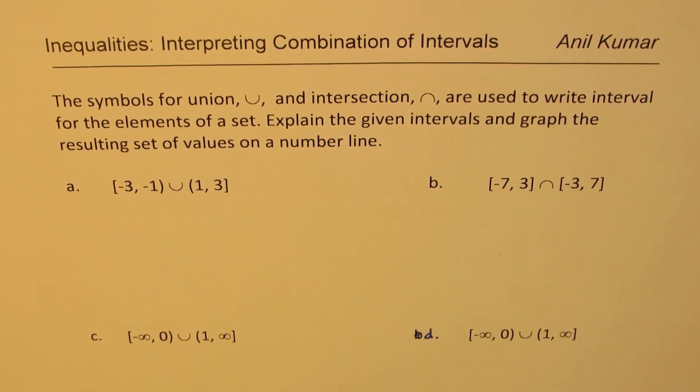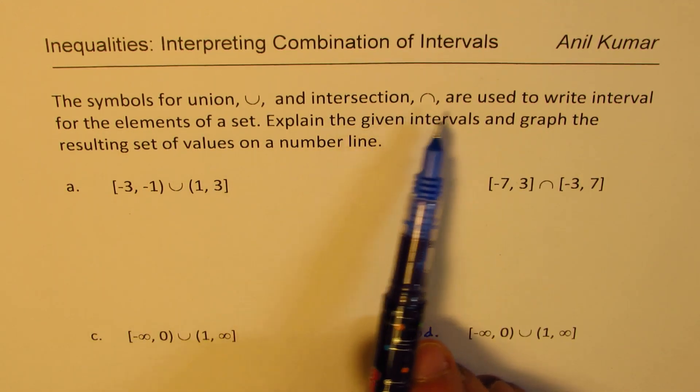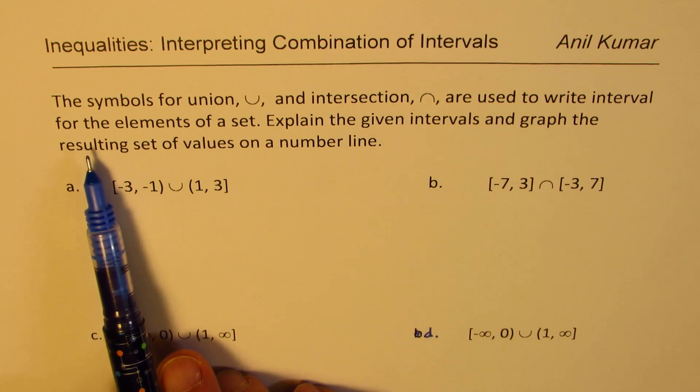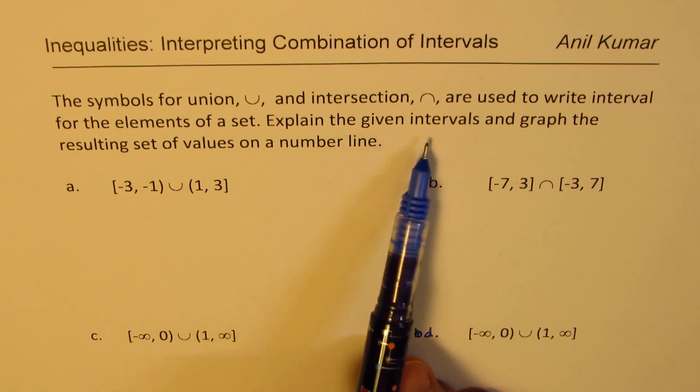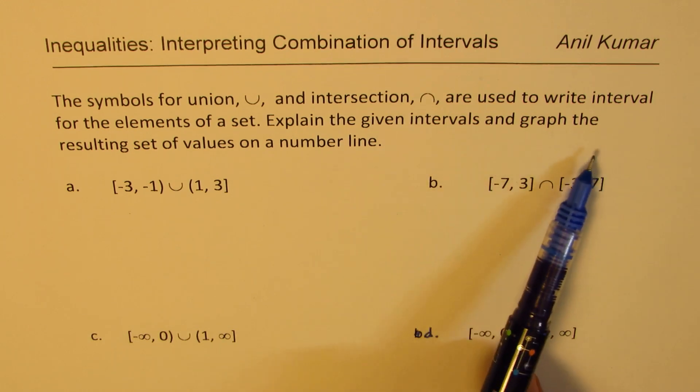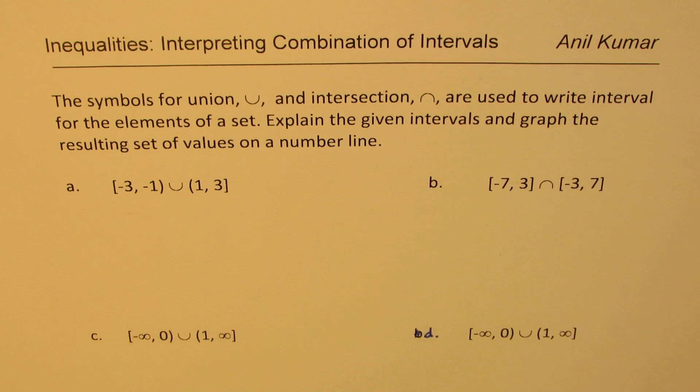These symbols are widely used in representing the solution on number line, and they are extremely important when we are working on inequalities. Based on this, the question here is: the symbols for union and intersection are used to write interval for the elements of a set. Explain the given intervals and graph the resulting set of values on a number line. So, here we have four parts to it. I'd like you to pause the video, answer this question, and then look into my suggestions.